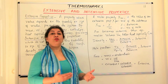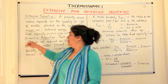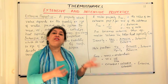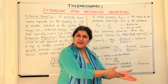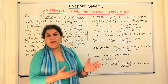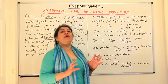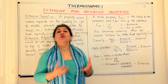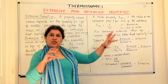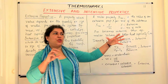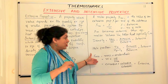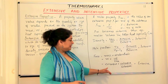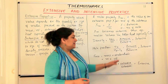Similarly, consider force — force equals mass times acceleration. Mass is extensive. Acceleration is velocity per unit time; both velocity and time do not depend on the quantity of substance, so they are intensive. Force, however, is extensive — it depends on the amount of substance, since a larger object made of the same material can exert more force. So we conclude: when you multiply an extensive property by an intensive one, or divide extensive by intensive, the result remains extensive.